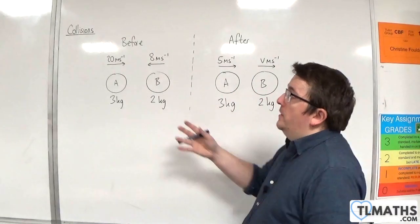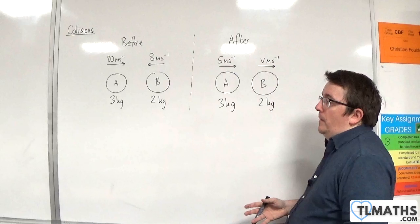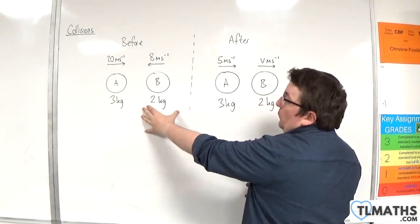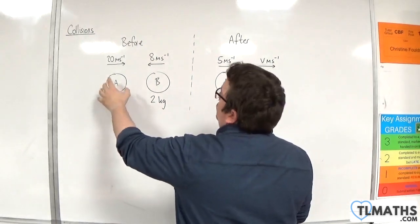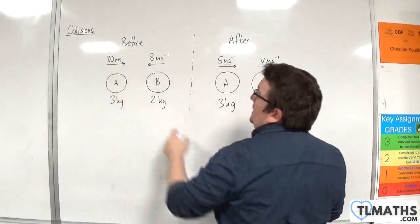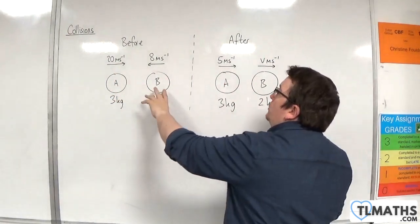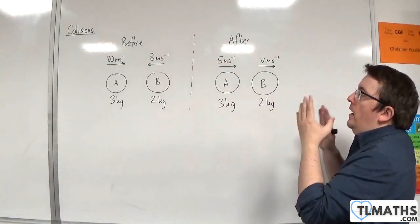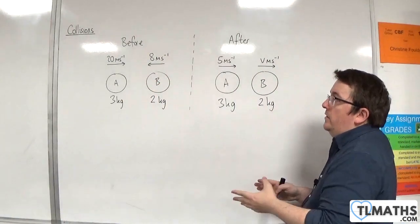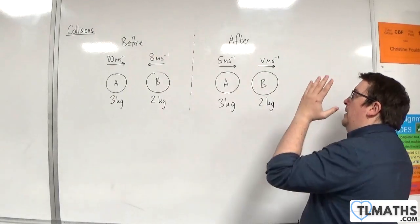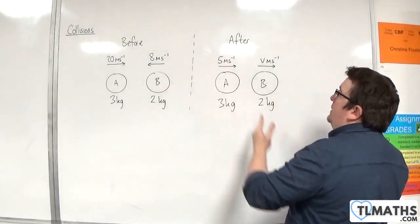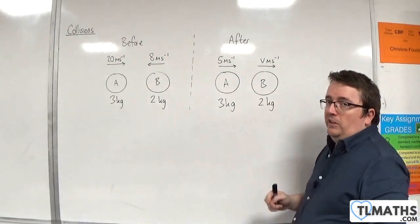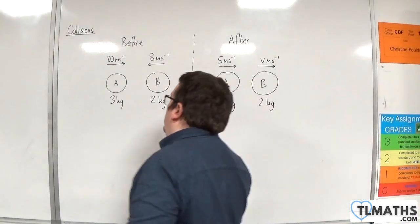In this problem we have two particles A and B. A has a mass of 3 kilos and B has a mass of 2 kilos. A is travelling to the right at 20 metres per second and B is travelling to the left at 8 metres per second. After they collide, A is travelling to the right at 5 metres per second and B is travelling to the right at V metres per second. We need to find V.